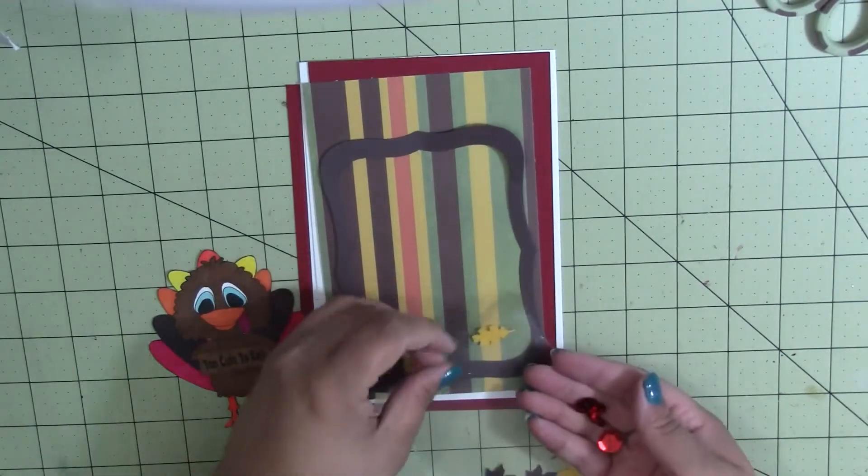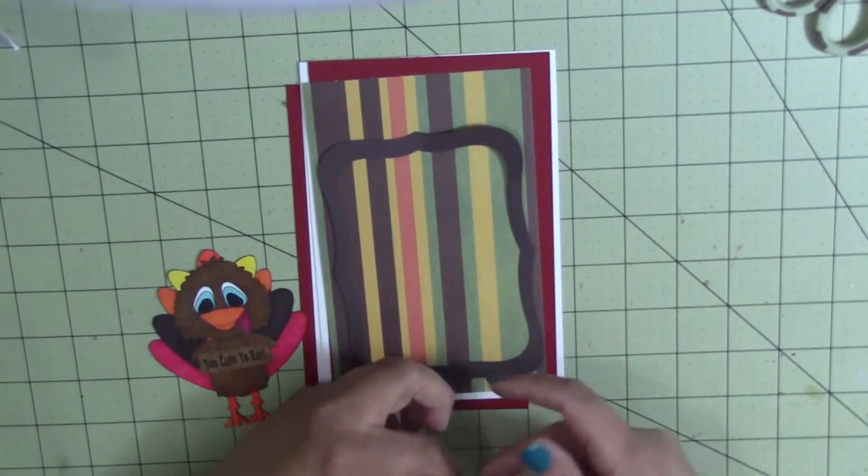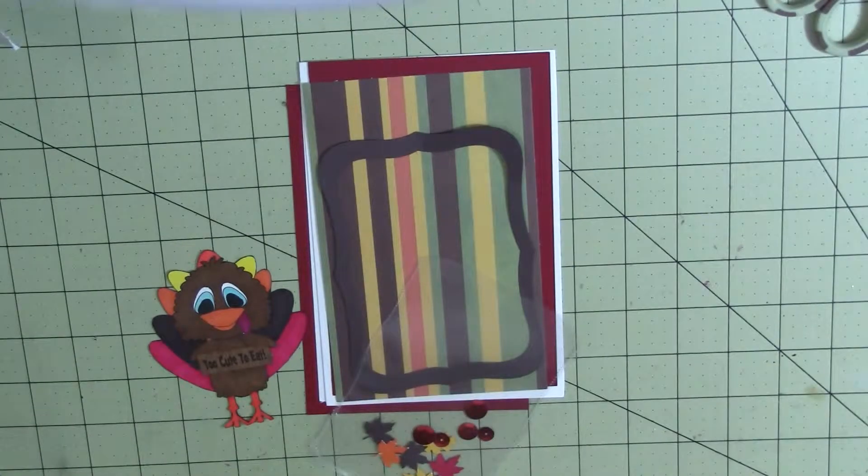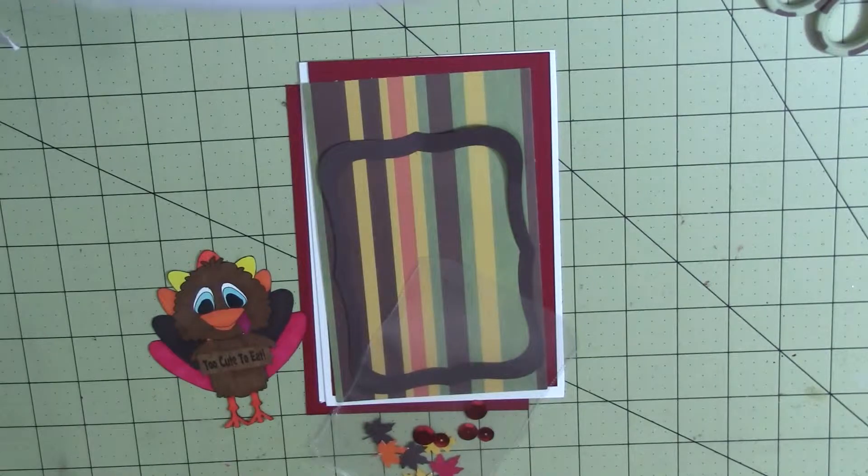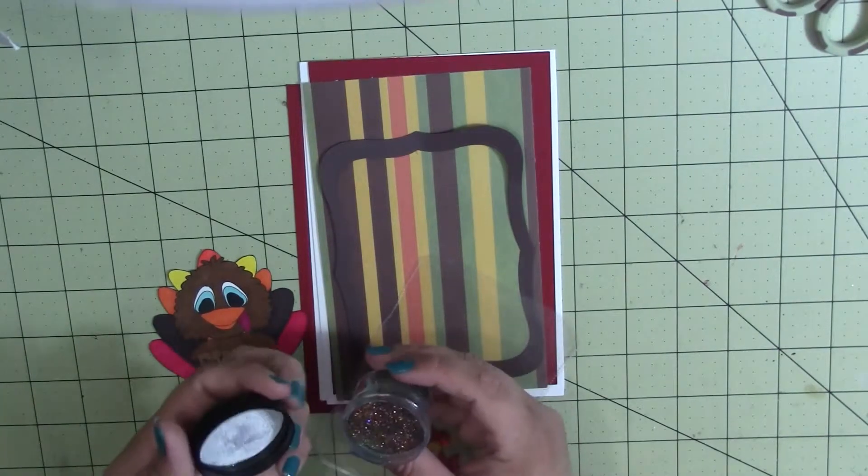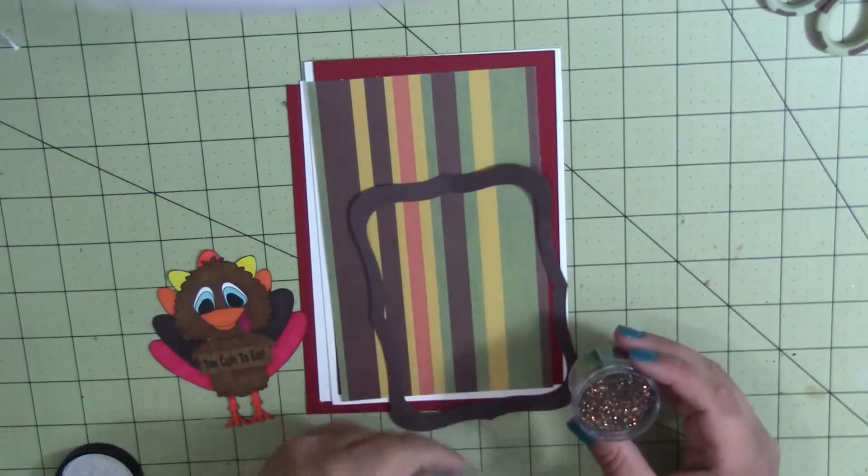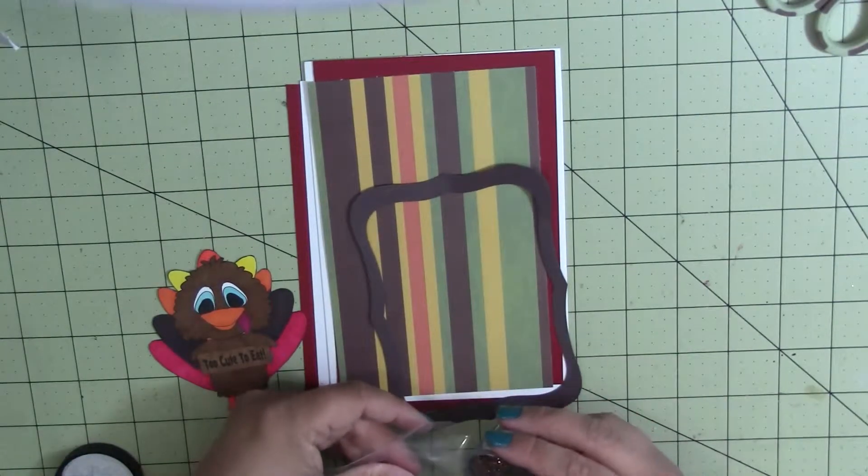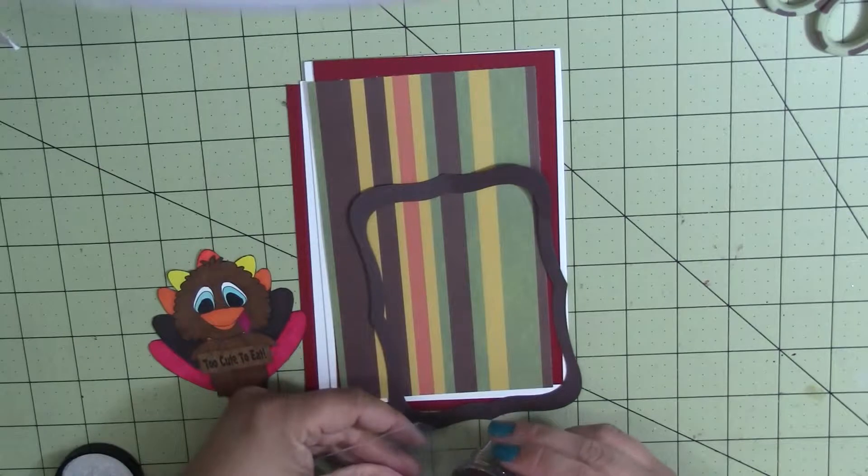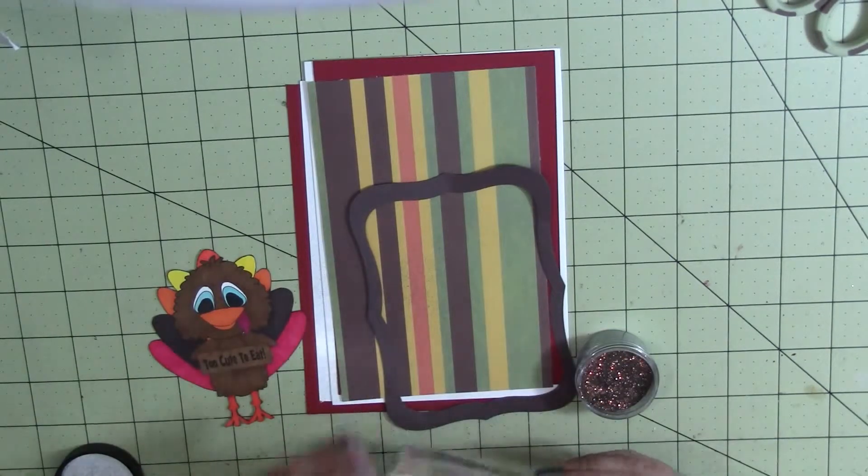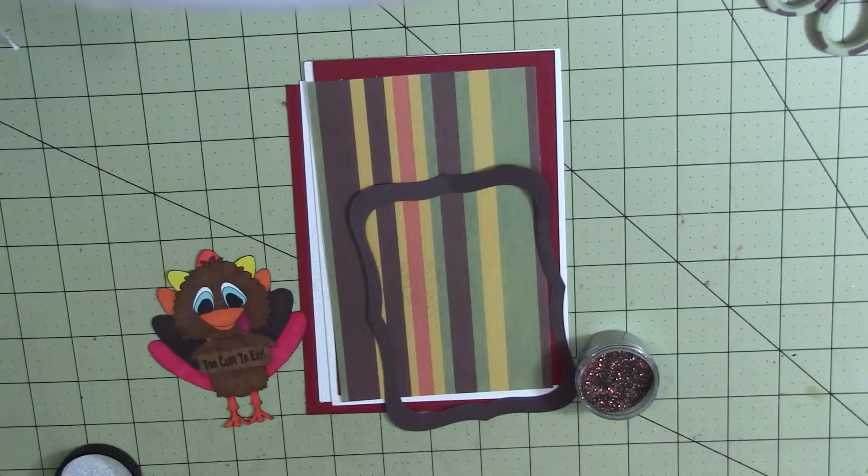And I have some glitter that is really kind of cool. I don't know if it will look good or not. But it's from Art Glitter. And it's called Autumn. And it's probably going to just kind of stick to the plastic.